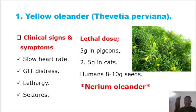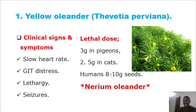The clinical signs once an animal eats yellow oleander include slow heart rate (bradycardia), gastrointestinal distress, lethargy, and seizures. Even a small dose is lethal — in pigeons, just 3 grams; in cats, 2.5 grams; and in humans, 10 grams of the seed is fatal. Nerium oleander has red flowers, is in the same family Apocynaceae, and is also a cardiac glycoside.